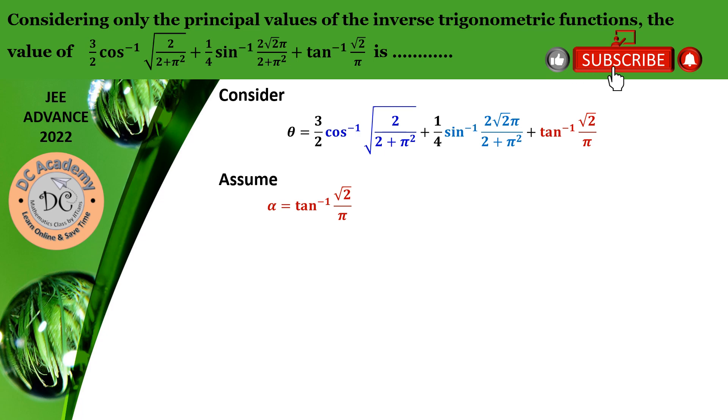As we are talking about only the principal values, we can consider that tan alpha equals root 2 by pi. Hence, we can say that pi equals root 2 by cot alpha. In other words, pi equals root 2 cot alpha.